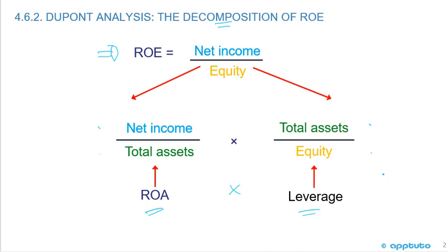We've seen both equations in a previous LOS when we first looked at ratios. Using algebra, if we cancel out total assets in the denominator and numerator, we're back to net income over equity. I've used some color coding in my slides to make it easier to follow. ROE — net income over equity — is the same as return on assets times leverage: net income over total assets, times total assets over equity. Cancel the assets and you're back to the blue over gold, net income over equity.